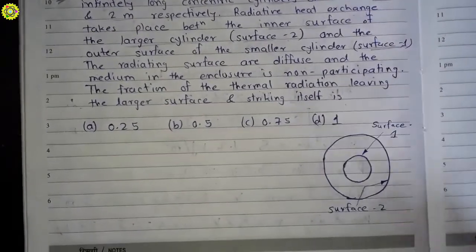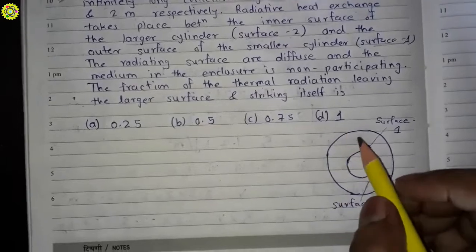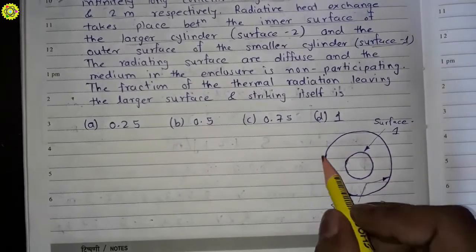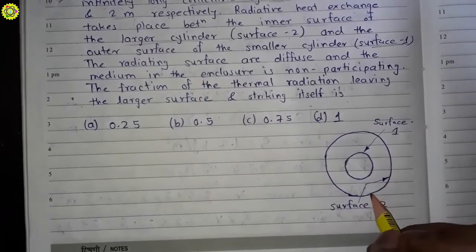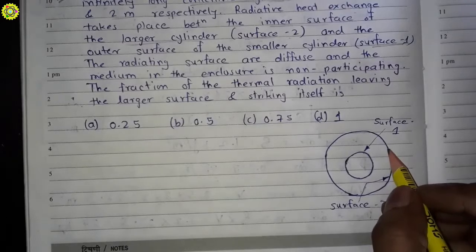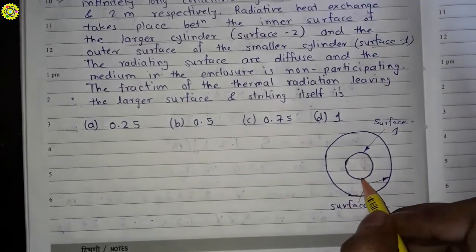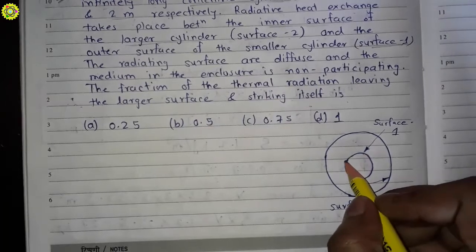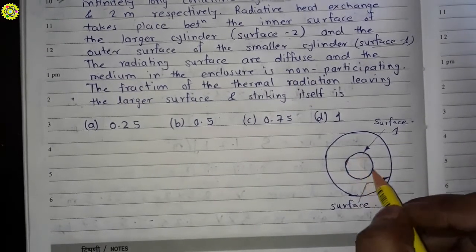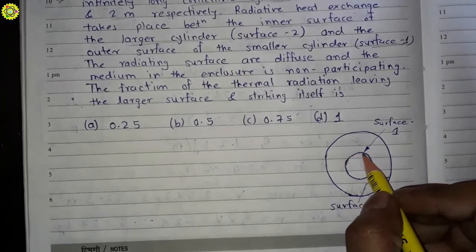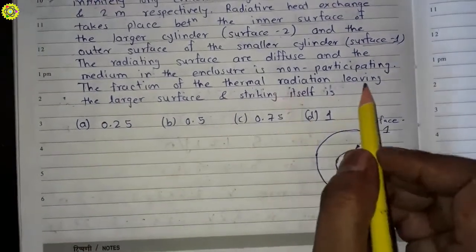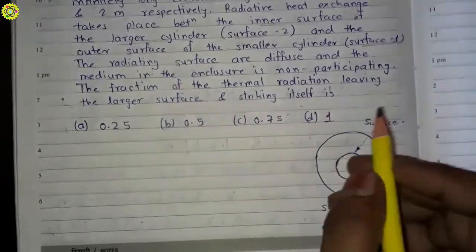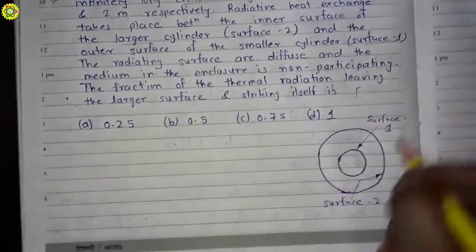Here is our diagram. The larger cylinder has surface 2, which is the inside surface of the larger cylinder and is concave in shape. The smaller cylinder has surface 1, which is the outer surface of the smaller cylinder and is convex. We have to find F₂₂ — the fraction of thermal radiation leaving the larger surface and striking itself.